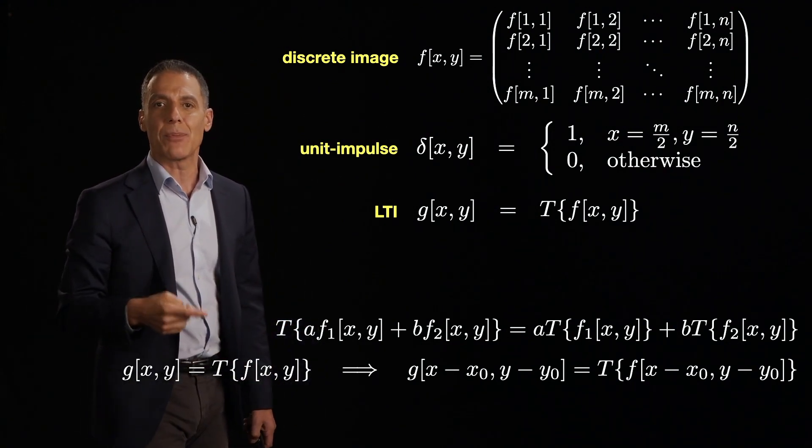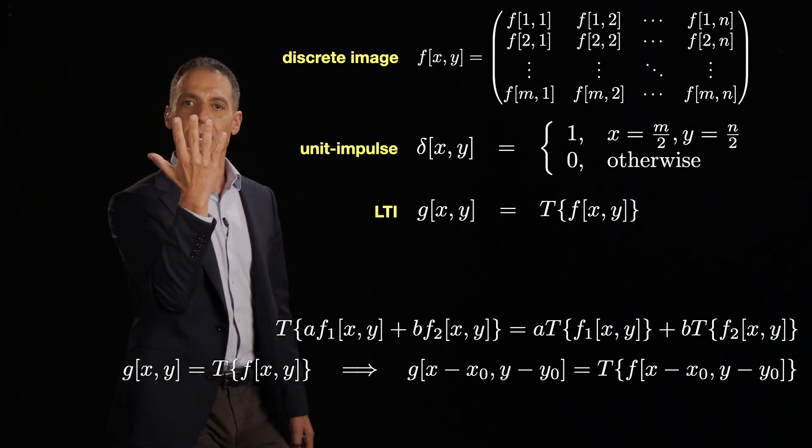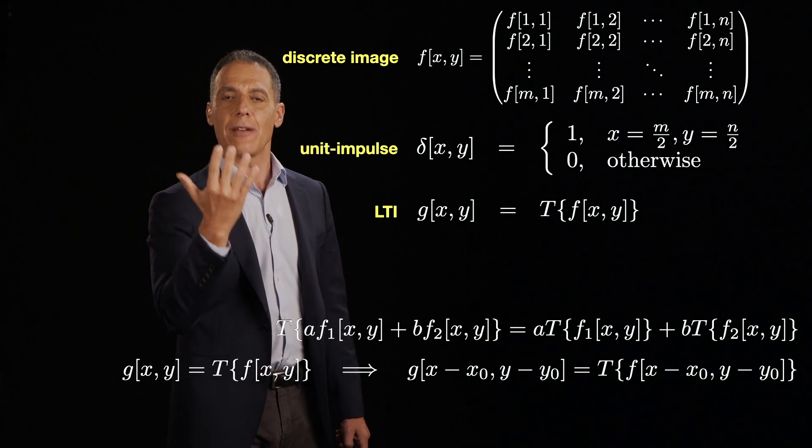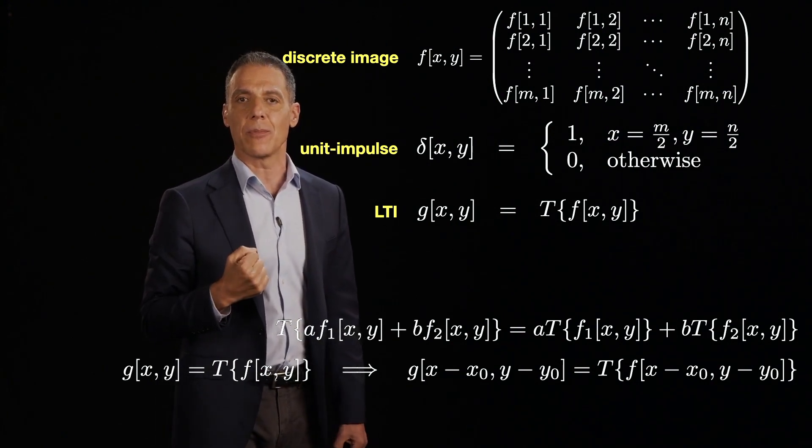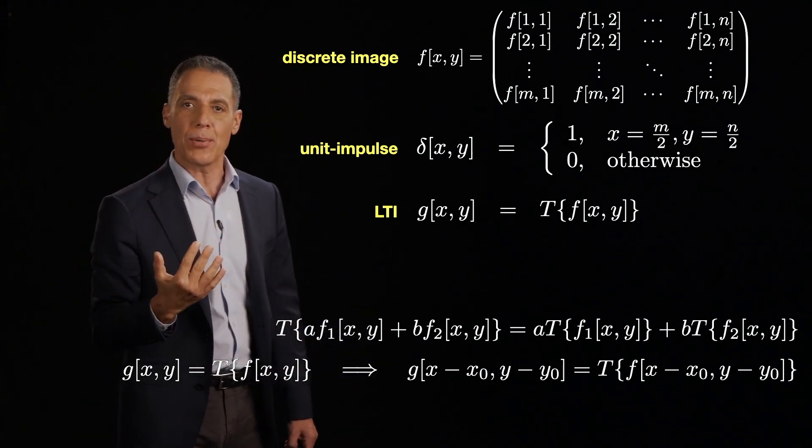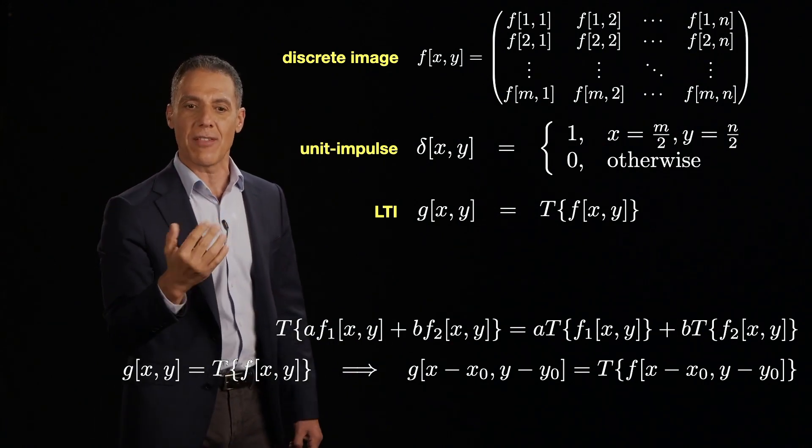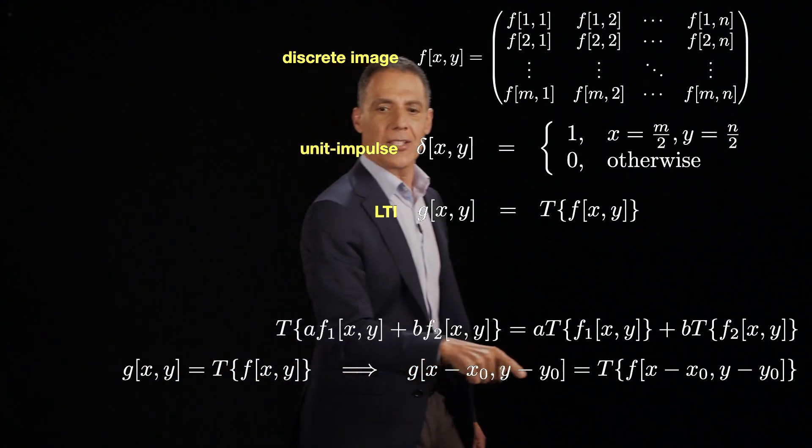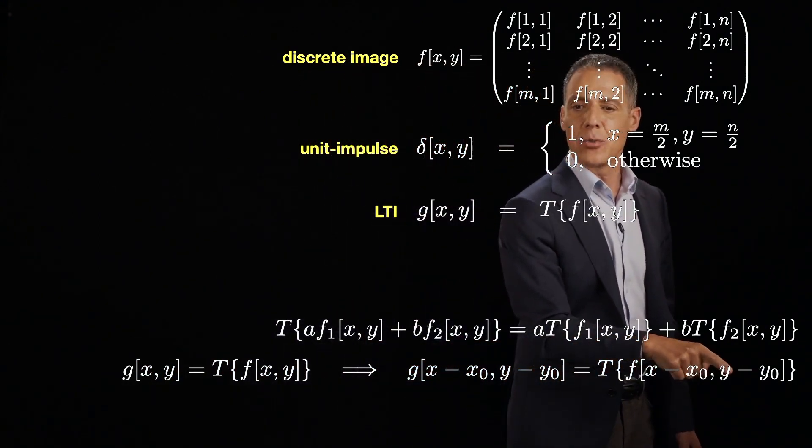The time invariance property is the same thing. Take an image and shift it in the horizontal and vertical direction and feed it to the linear time invariant system. It's the same as taking the output of the unshifted image and just shifting that.